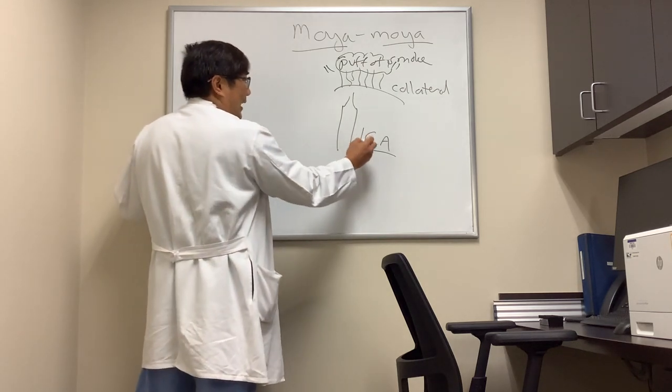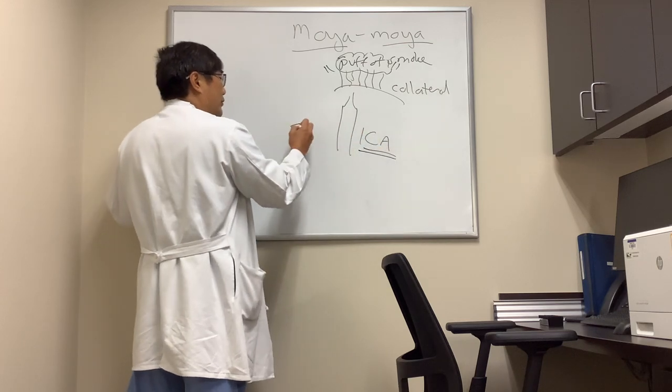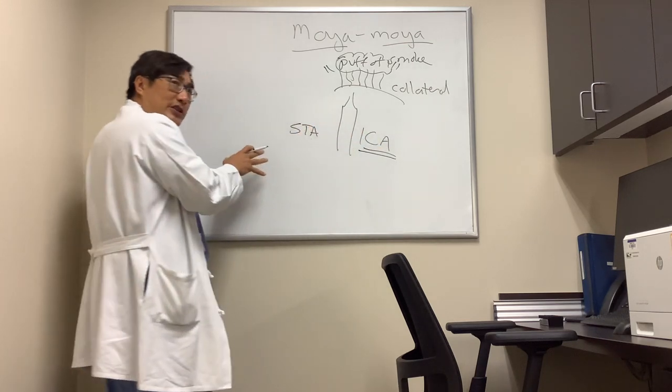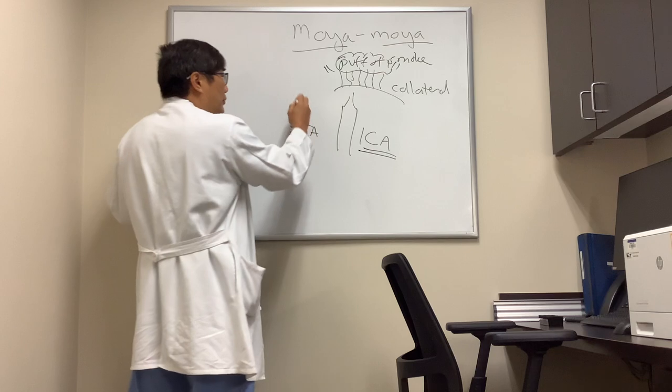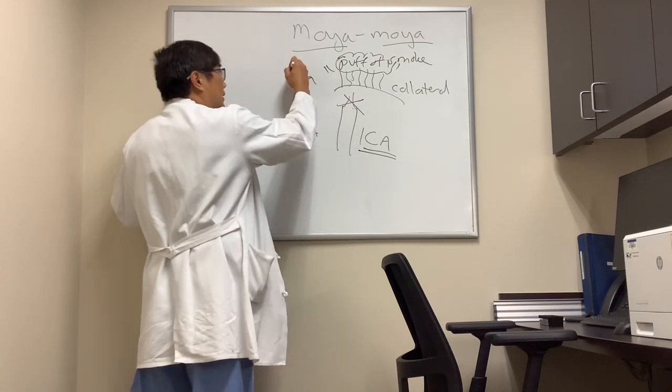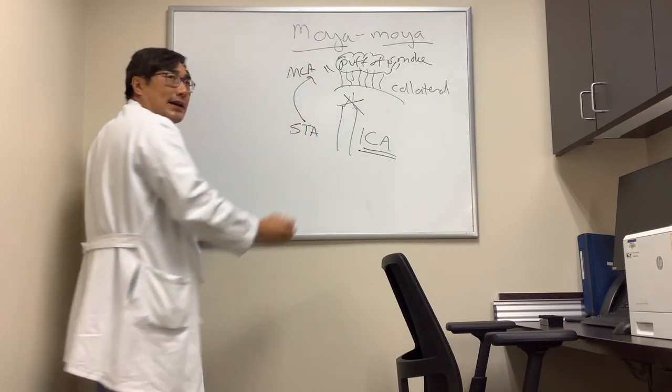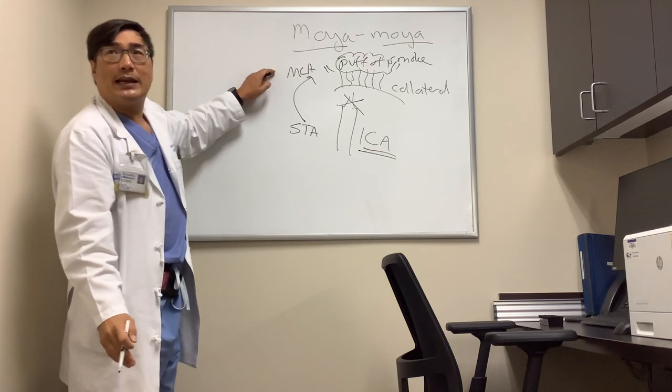One is to bypass the ICA occlusion by using the superficial temporal artery, which is from the external carotid to bypass the obstruction and just hook it up to the MCA. So this is a STA, MCA bypass.